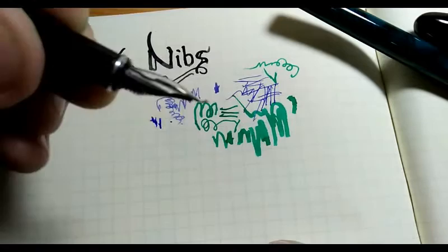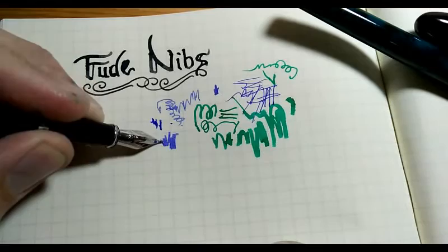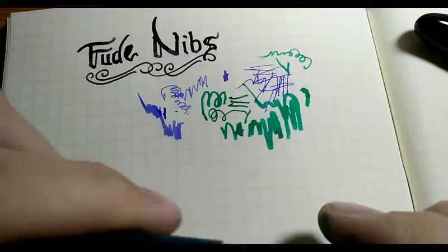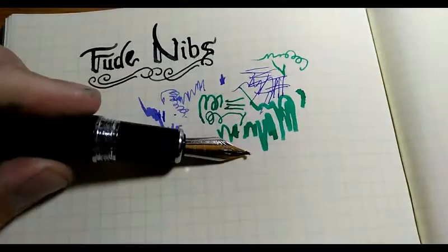And these are, this came with the pen, so it's about a number five. This one is definitely a number five nib, that number five is the size but the size of the nib. A number six nib is larger, compare them.